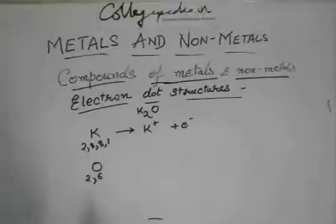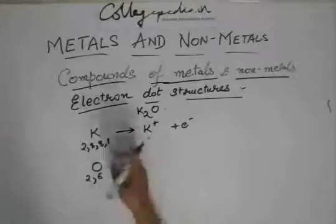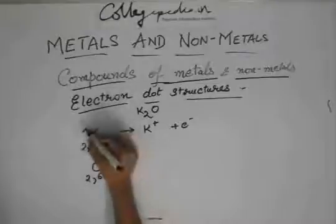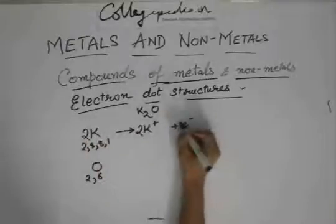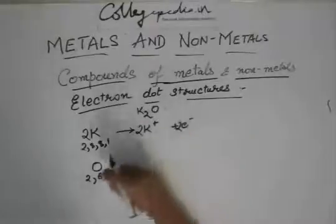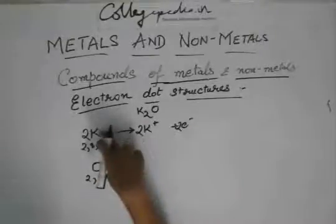So what it does is that it takes one electron from this potassium and it takes another electron from another potassium. So basically one oxygen requires two potassium.